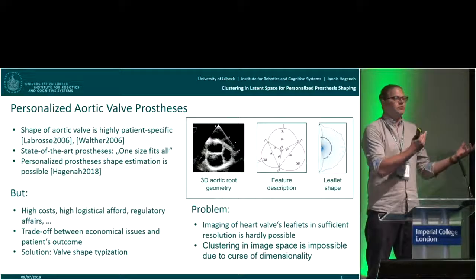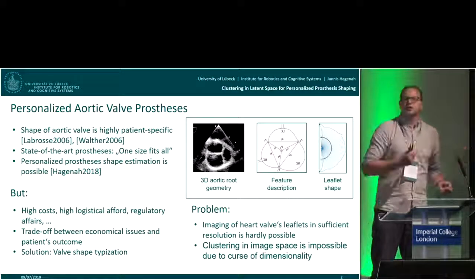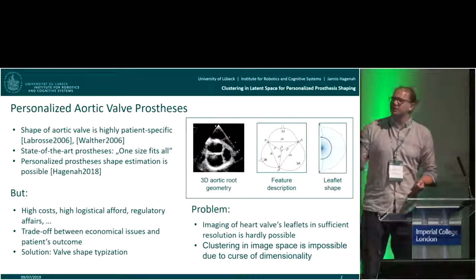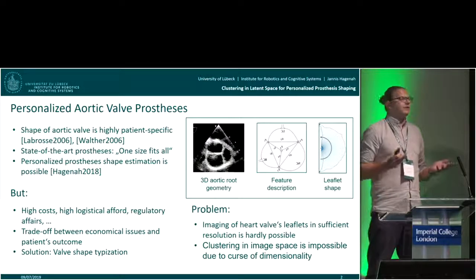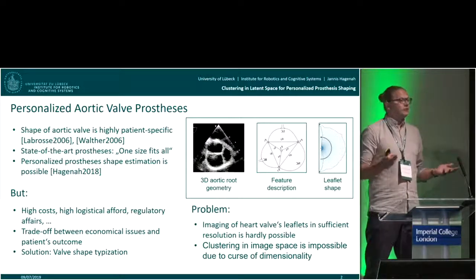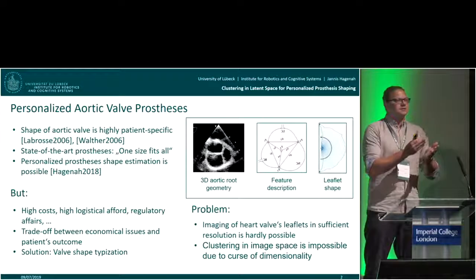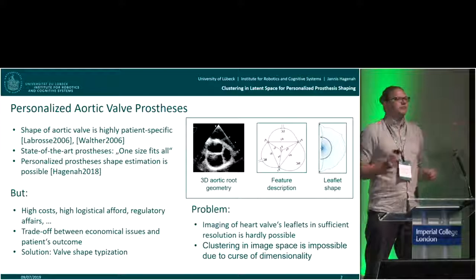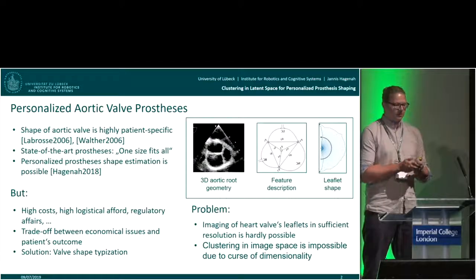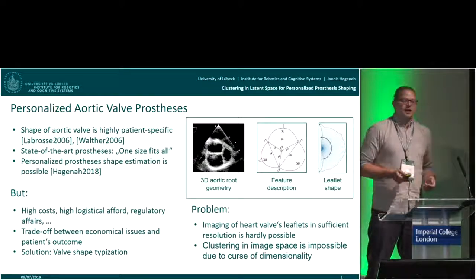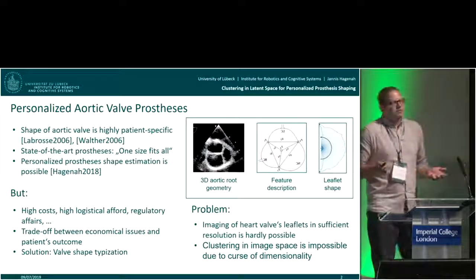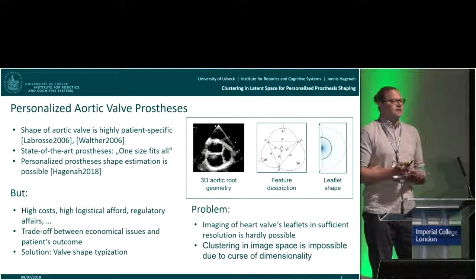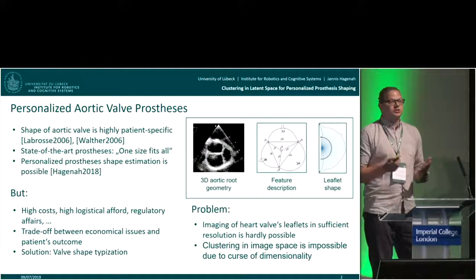The thing in between that we try to tackle and present here is identifying typical shapes of aortic valves, so that we can say these are five different prosthesis shapes that we can offer. This basically leads us to a clustering approach.